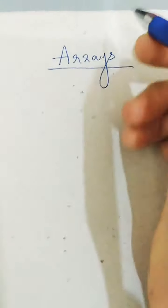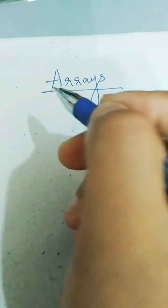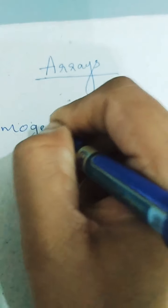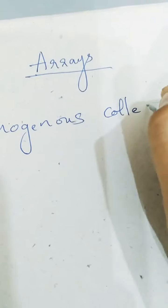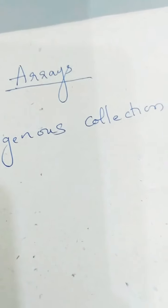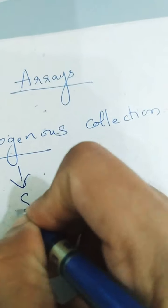Hello everyone. Today we are going to start discussing about arrays in Java. What is an array? An array means it is a homogeneous collection of elements. Homogeneous means same type of elements — an array contains same type elements.